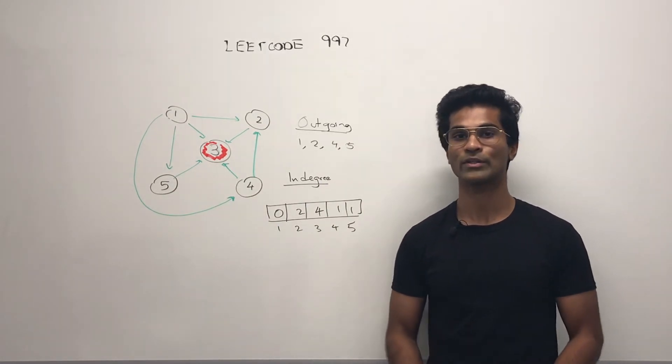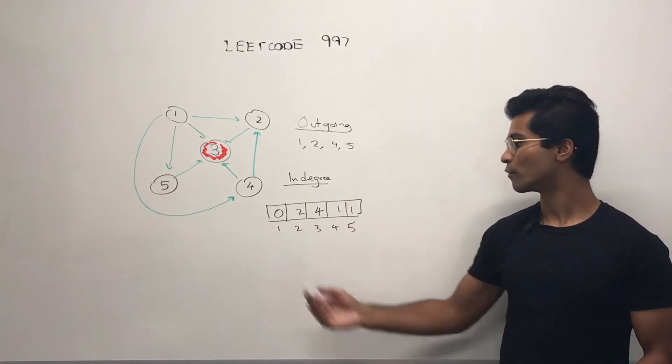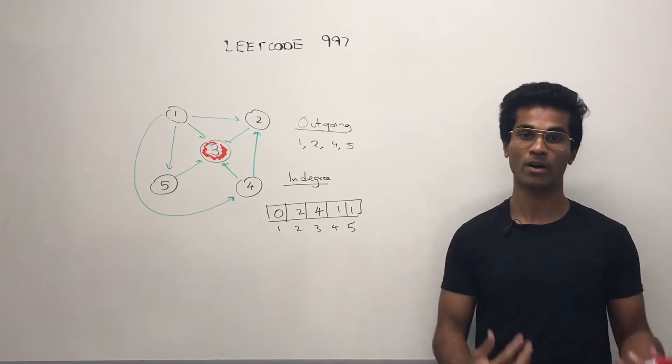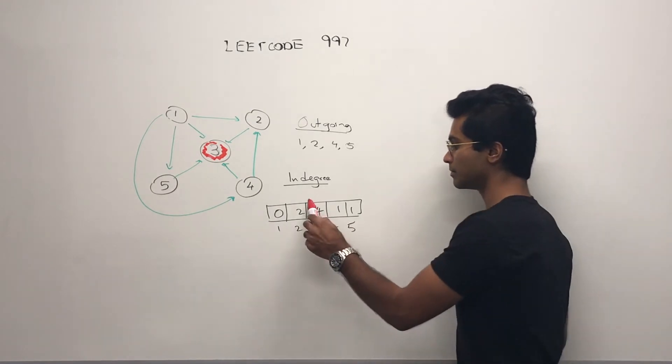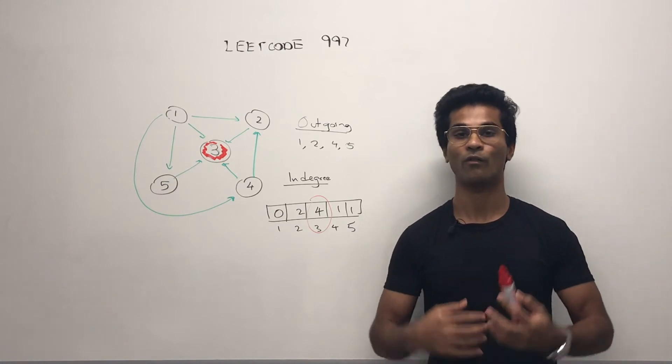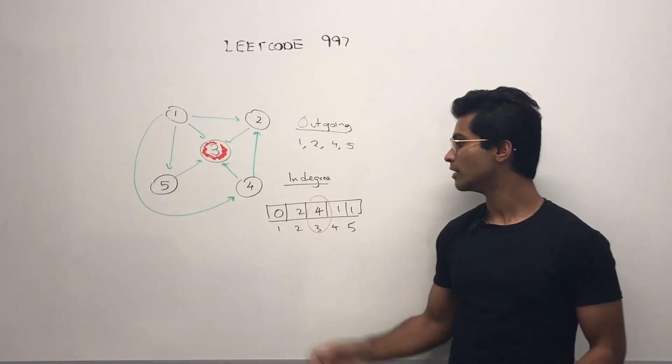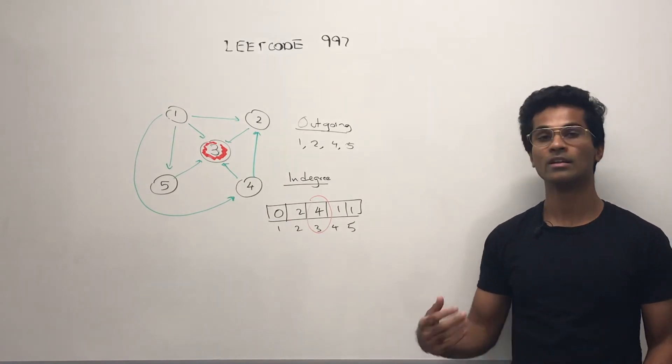Simultaneously, we are going to collect the in degrees of each node. So the in degree for each one of these nodes is a different value, but only one of them is going to have an in degree of all the rest of the nodes. So 1 has no in degree, 2 has 2 in degrees, so on and so forth.